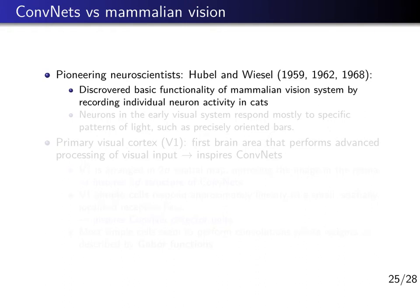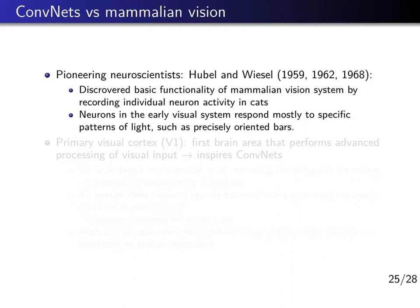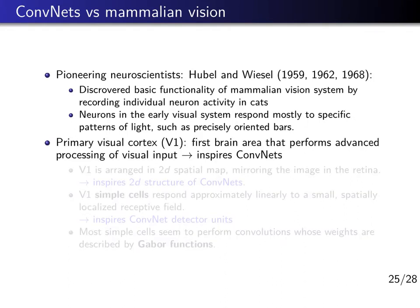In this last part, I want to say a few words about the biological motivation of convolutional neural networks. In the 1950s and 60s there was pioneering work by neuroscientists Hubel and Wiesel on the visual cortex in cats. With their experiments they discovered the basic functionality of how the vision system in mammals works. They recorded the activity of individual neurons in cats by showing them particular images or shapes, and found that neurons in the early visual system specifically respond to certain patterns of light — for example, precisely oriented bars like horizontal or vertical bars. Hubel and Wiesel specifically studied the primary visual cortex, V1, which is the first brain area that performs advanced processing of the visual input coming from the eye, and this gives a lot of inspiration to convolutional neural networks.